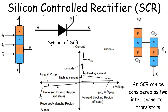The curve shows the different states, from the forward blocking region to the reverse blocking region, and finally to the ON state when the SCR is conducting fully. The voltage required to keep the SCR conducting is known as V_TM, the threshold voltage, and once this is exceeded, the device stays on until the current drops below the holding level.